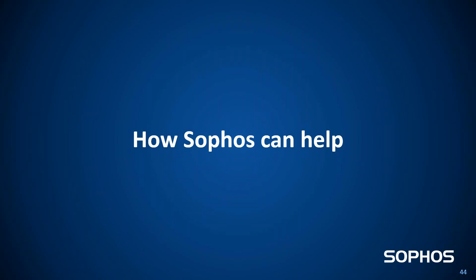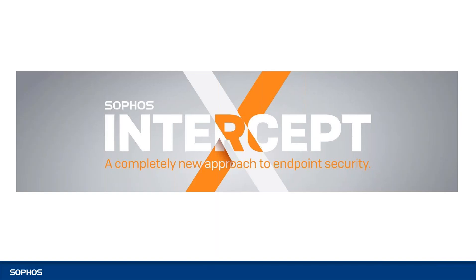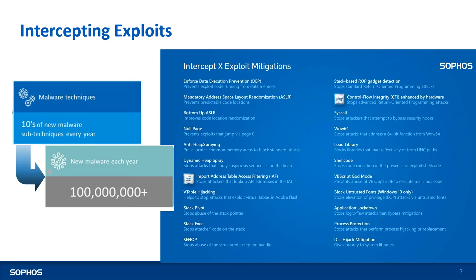Moving now to how we can help. We've talked about the history of ransomware, how it is executed, the anatomy of attacks, the defense steps, the best practices, and why it is successful. Now let's understand how Sophos as a company can help. Sophos has recently introduced Sophos Intercept X, which is a completely new approach to endpoint security. We were talking about exploits and known vulnerabilities in day-to-day applications.